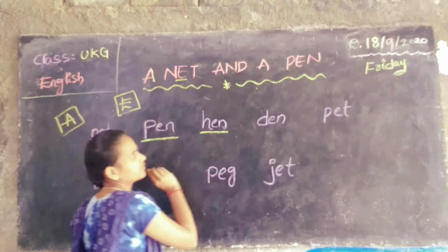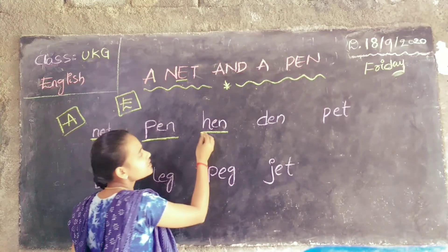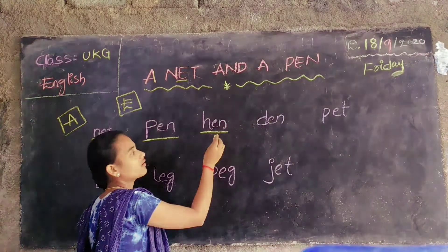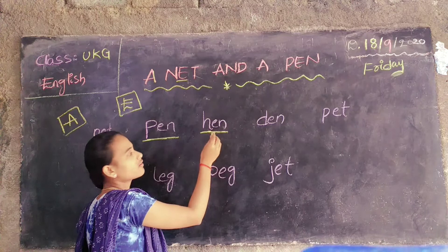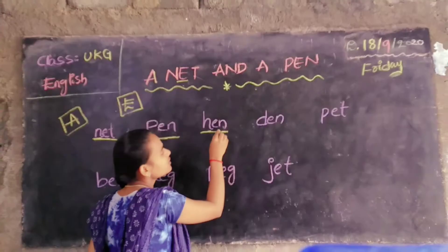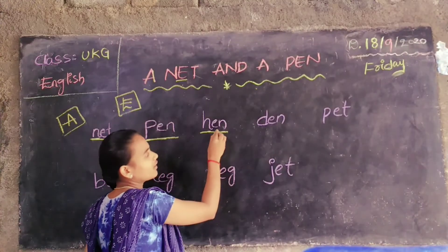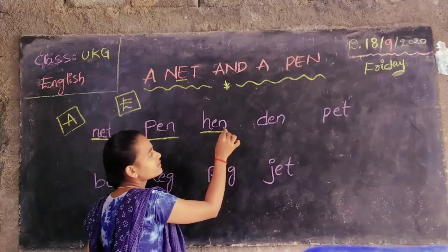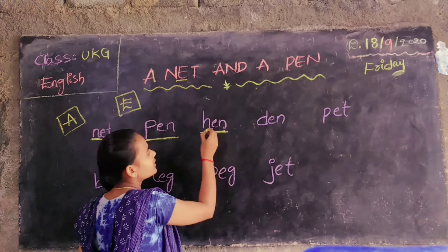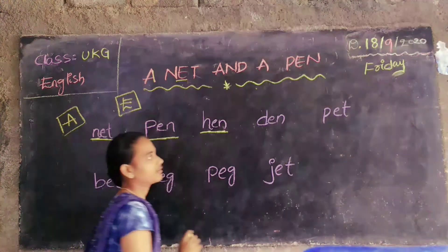Then next: H-E-N. The sound of H is H. Next, sound of E is A. N sound? N. H-E-N. Hen.